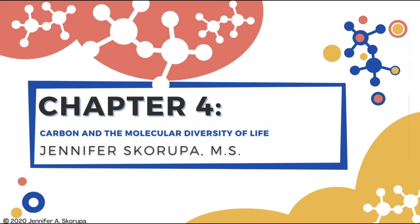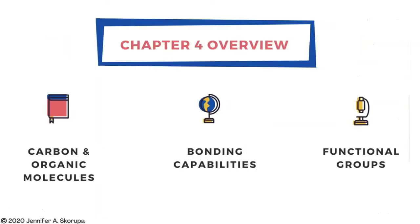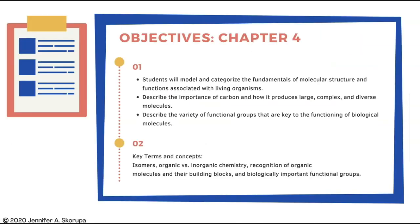Welcome back to your online video lectures. This chapter will be all about carbon and why it is able to build so many diverse molecules. We will focus on organic molecules and their ties to the origin of life, carbon's bonding capabilities including hydrocarbons and the formation of isomers, and we'll finish off with functional groups. By the end of this chapter you will be able to model and categorize the fundamentals of molecular structure and functions associated with living organisms.